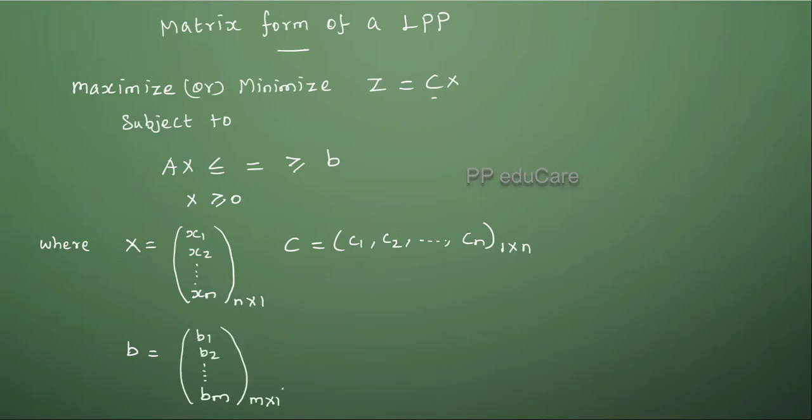It is an m by 1 matrix and this coefficient matrix A is A11, A12, etc., A1n, A21, A22, etc., A2n, Am1, Am2, etc., Amn.